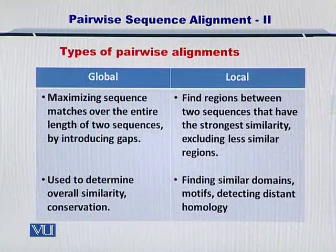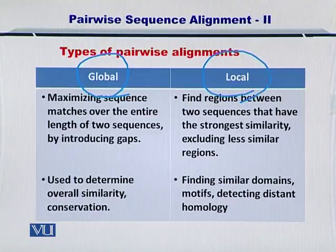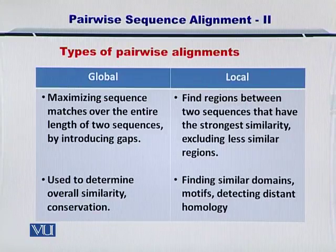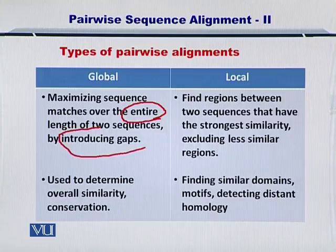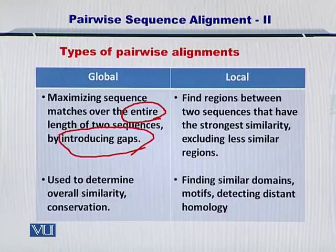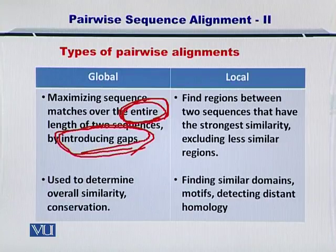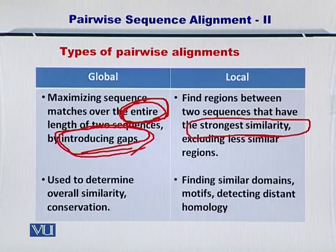Now let's take a look at the types of pairwise sequence alignments. There are two types in general: one is global and the other is local pairwise alignment. In global pairwise alignment, your aim is to maximize the sequence matches over the entire sequence by introducing gaps. While in local pairwise sequence alignment, you only go for the strongest similarity within the sequence — it does not have to be the entire sequence. You are only matching the local portions within the sequence.